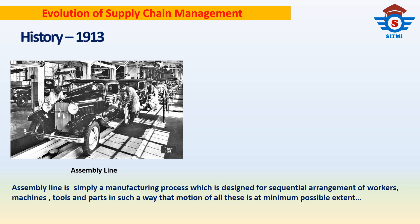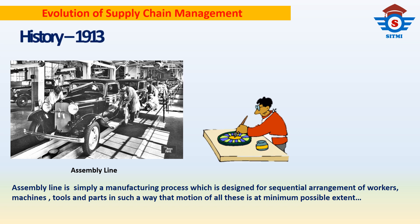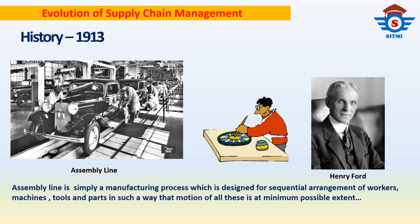Before the industrial revolution, most manufactured products were made individually by hand. A single craftsman or team of craftsmen would create each part of a product. However, the concept of the assembly line changed an era in industrial engineering and production. In 1913, Henry Ford installed the first moving assembly line for the mass production of an entire automobile, which significantly reduced the time in building a car.